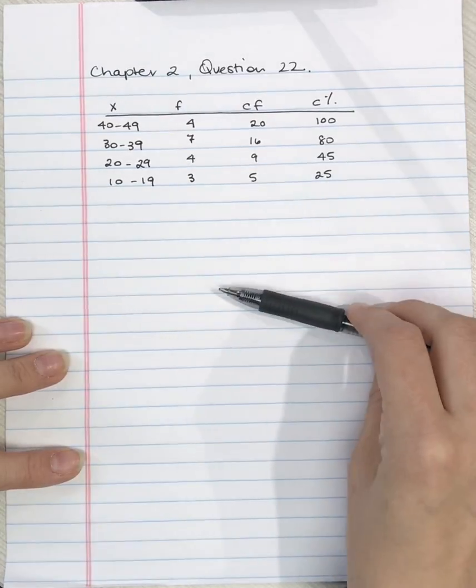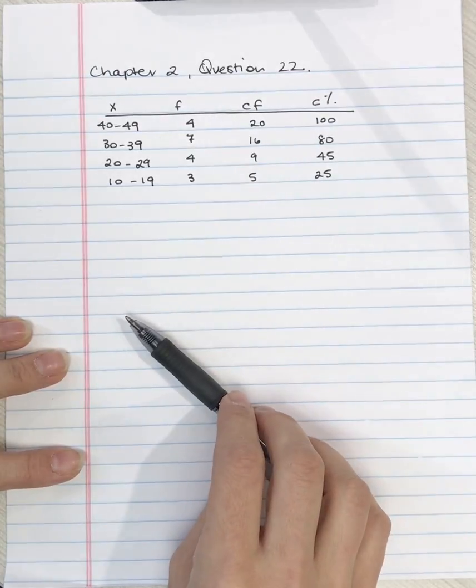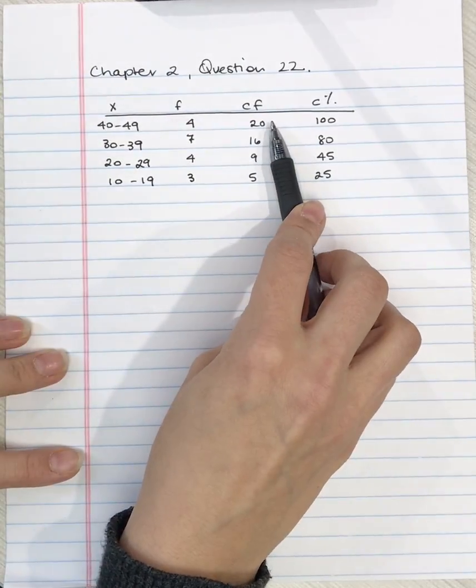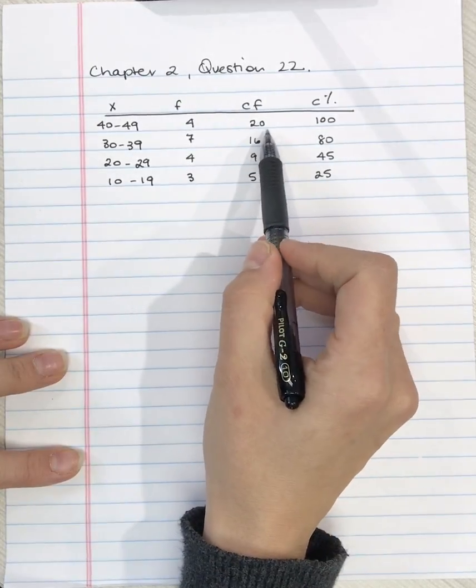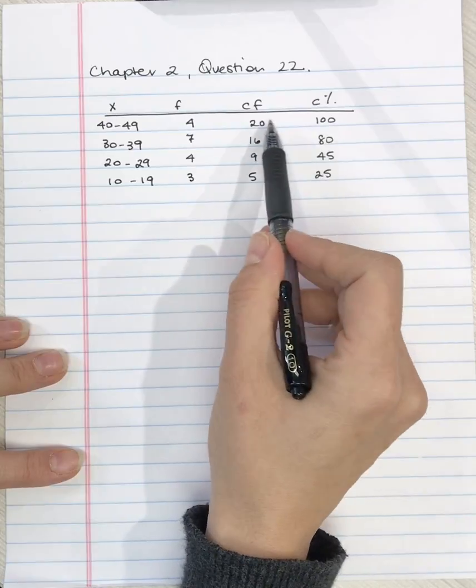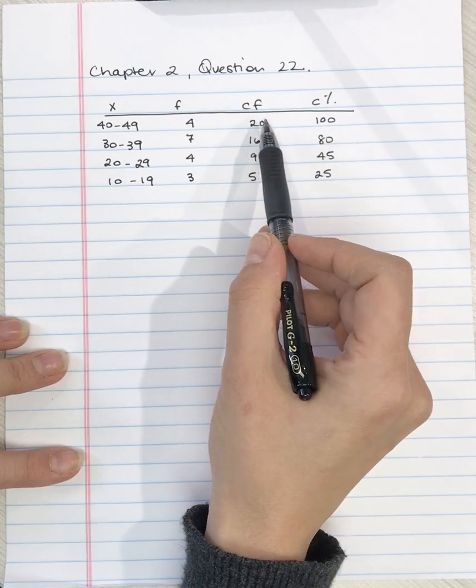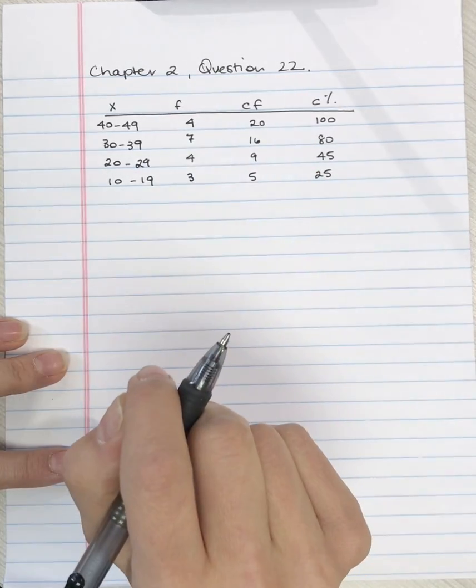We do know that we have the top part of the frequency distribution because the question says n equals 20 scores and we've got a cumulative frequency of 20. But even if the question didn't tell us that, we can tell because the cumulative percentage says 100 percent, which means this must be the top row.